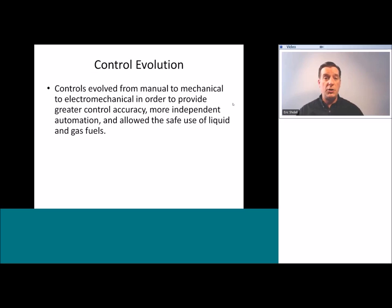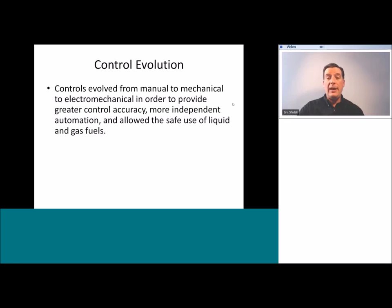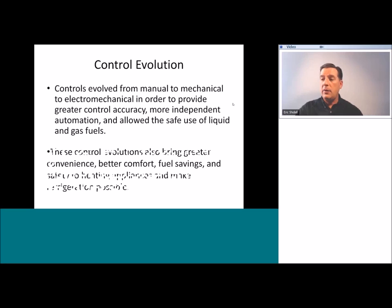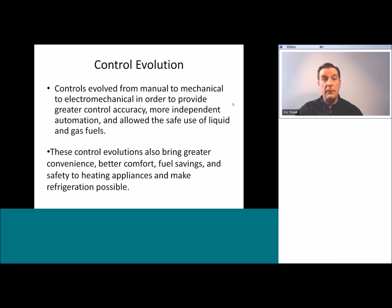So all along, controls have been evolving from manual to mechanical to electromechanical. The reason for this evolution is to provide greater accuracy, more independent automation, and it also allows the safe use of liquid and gas fuels. Having this automatic operation is a huge advantage when using liquid and gas fuels. These control evolutions also bring greater convenience, better comfort, fuel savings, and greater safety to our heating appliances.